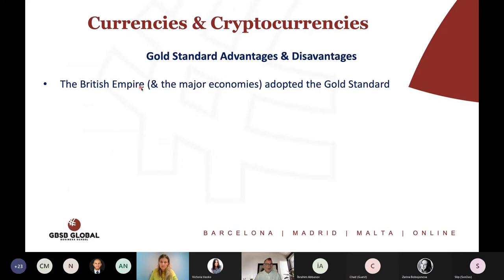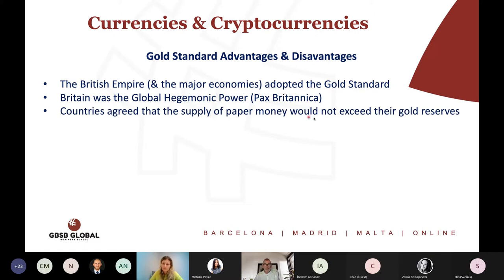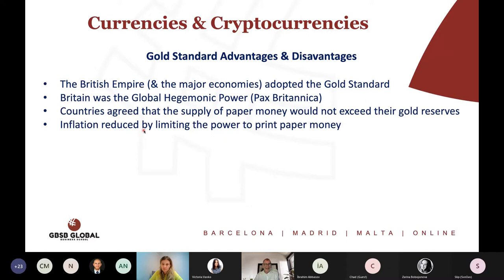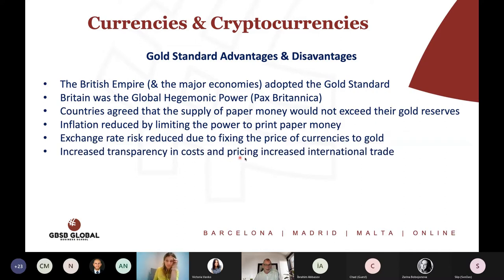The advantages are that the British Empire and major economies adopted the gold standard, making Britain a hegemonic power. Under this power, until the First World War, we had peace throughout the world because the British Navy ensured it. Countries agreed the supply of paper money would not exceed their gold reserves, so all money was backed by gold. This limited the power to print paper money — monarchs could only print as much money as they had gold. Exchange rate risk was reduced by fixing the price of gold to currencies, giving increasing transparency in costs and pricing during international trade.